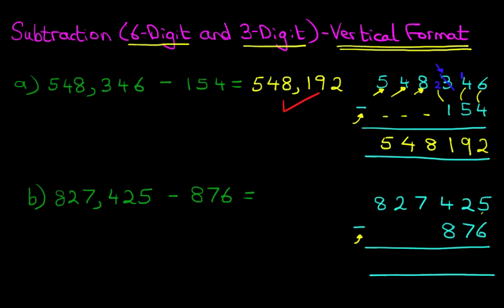Starting on the right-hand side, we have 5 minus 6. Because 5 is smaller than 6, we have to take 1 from the digit on the left — in this case it's a 2. Let's cross out 2. 2 minus 1 is 1, and the 1 we have taken from here we are going to add to the 5. So the units column now reads 15 minus 6. 15 minus 6, the answer is 9.